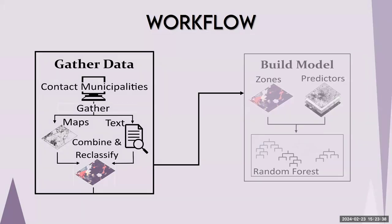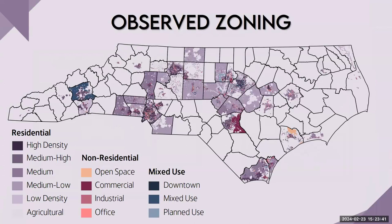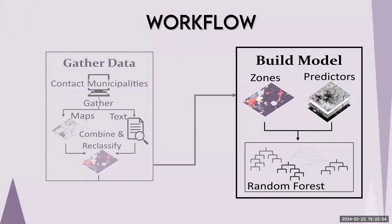Once we combined and reclassified those data across North Carolina, we ended up with an observed zoning map covering approximately 25% of the area of the state, displaying those 13 different sub-districts. Once we had that complete reclassified map, we moved into our second stage of the workflow: building our model. The first question was what we needed to predict zoning — what could explain the variation found in zoning districts?